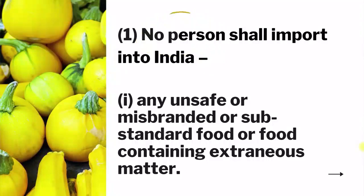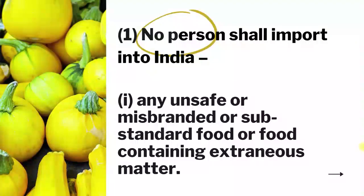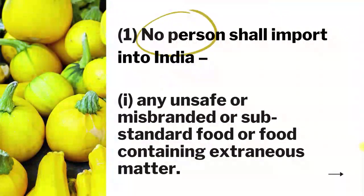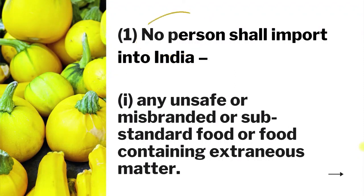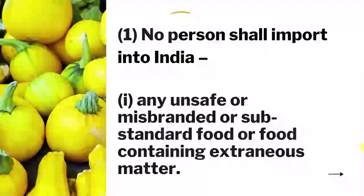If we talk about Subsection 1, the act states: no person shall import into India any unsafe or misbranded or substandard food or food containing extraneous matter. So here it is clearly stated that any person — be it an FBO, any individual, manufacturer, or scientist — shall not import into India any article of food that is unsafe, has wrong branding, is of substandard quality, or contains extraneous matter.